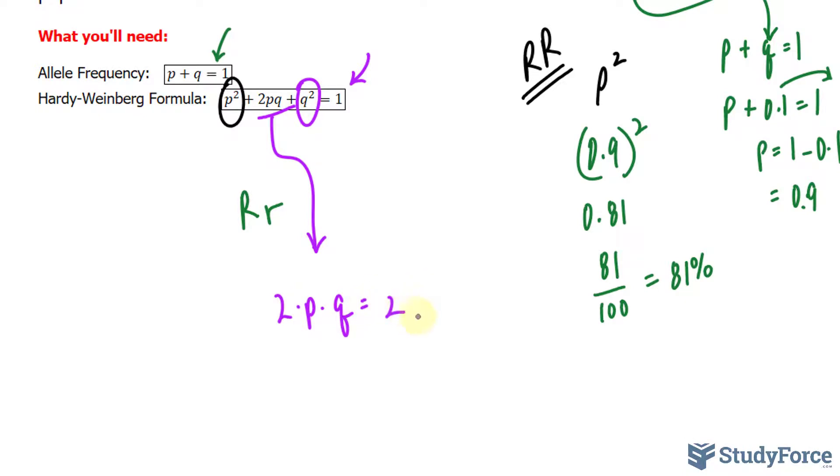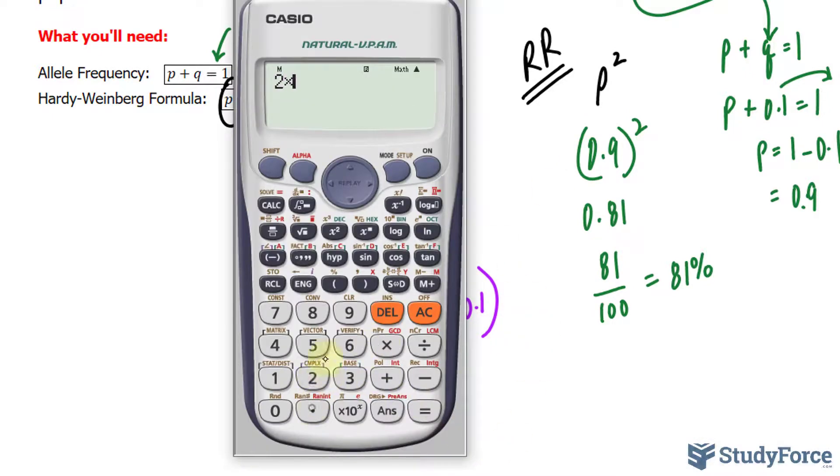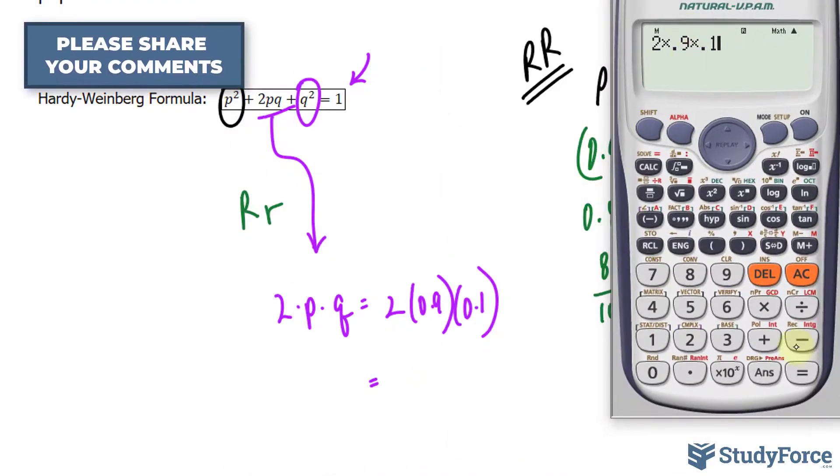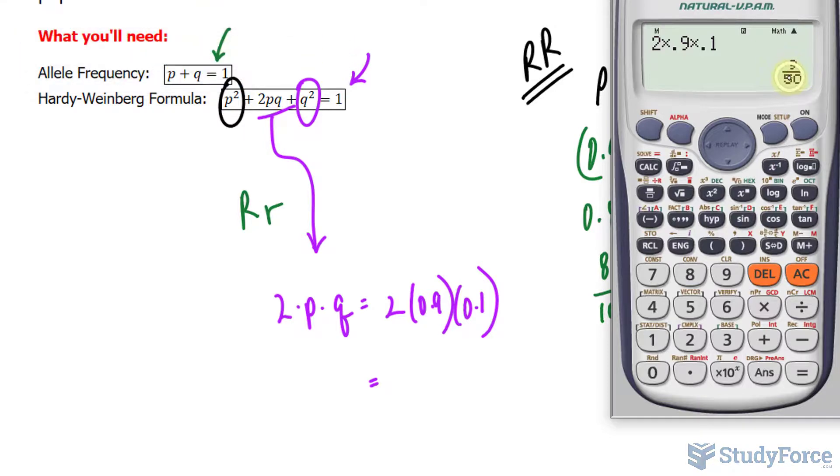We already know little p, it's 0.9. We already know little q, it's 0.1. Let's multiply these out, 2 times 0.9 times 0.1. And this makes, I'll make this fraction so that it has a denominator of 100 rather than 50. I'll multiply the bottom and the top by 2, we have 18 over 100.